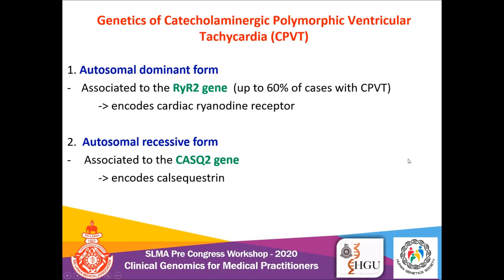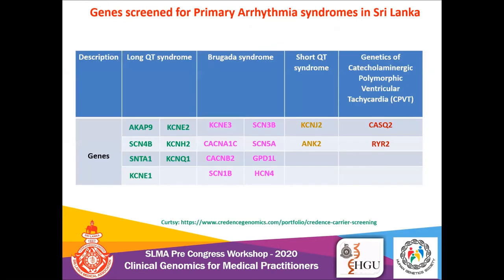CPVT has two inheritance patterns: autosomal dominant and autosomal recessive. The autosomal dominant form is associated with mutation in the RYR2 gene, responsible for up to 60% of CPVT cases. The autosomal recessive form is linked to mutation in the CASQ2 gene. Regarding screening in Sri Lanka, the private laboratory mentioned appears to have facilities to screen these genes along with other genes related to inherited conditions, and their gene panel includes these as well.